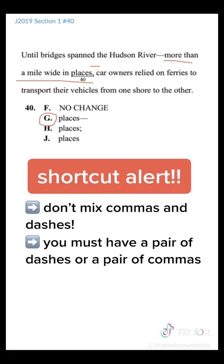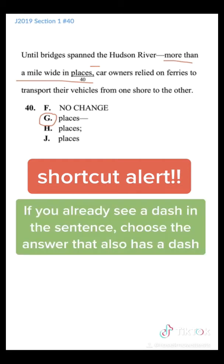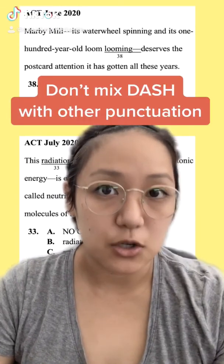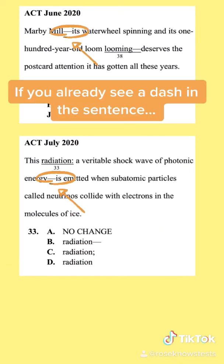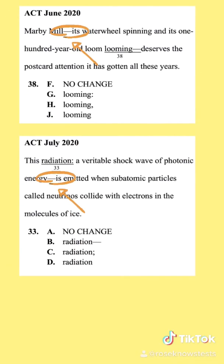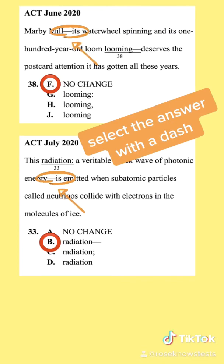A shortcut: you can never mix commas and dashes on the ACT. You will only ever see a pair of dashes or a pair of commas. So, if you see a comma or a dash in the sentence, look for that punctuation in the answer choices to quickly eliminate answers. On the ACT, if you already see a dash in the sentence, select the answer that also has a dash.